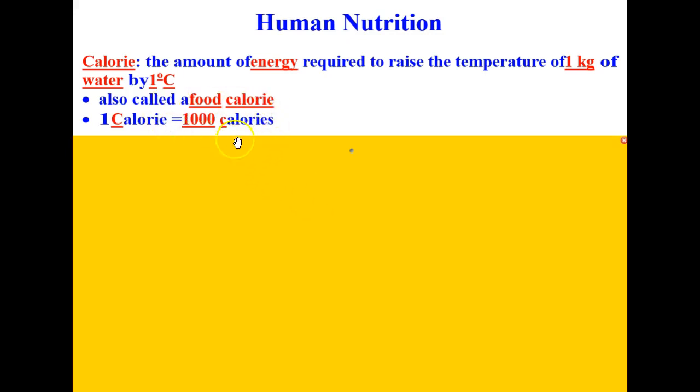This unit, a calorie spelled with a lowercase c, is a calorie that you'll learn about in chemistry. A calorie in chemistry is the energy required to raise the temperature of one gram of water by one degree Celsius. The difference between one gram and one kilogram is that one kilogram is 1,000 grams. So it should make sense that one food calorie is equal to 1,000 chemistry calories.